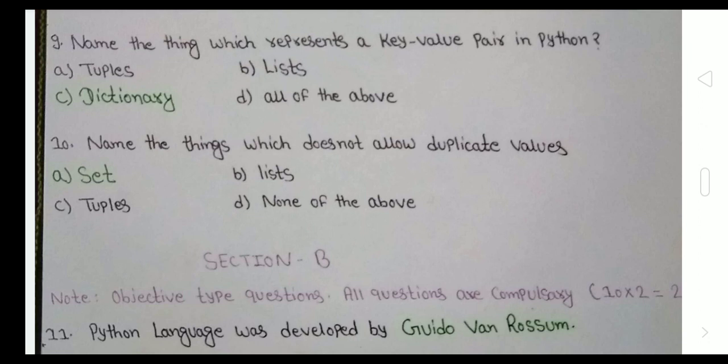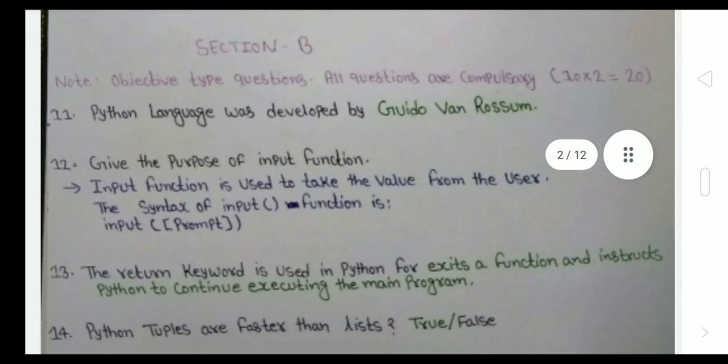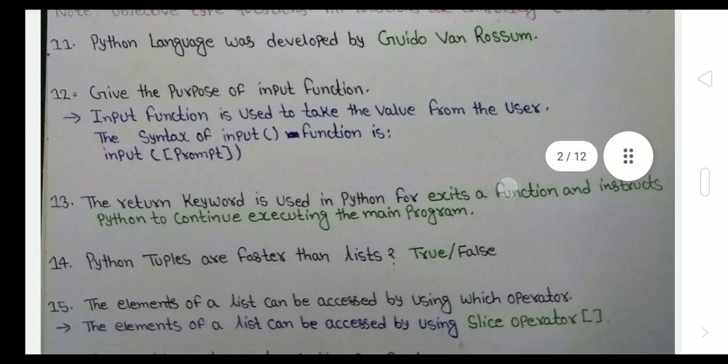Name the thing that does not allow duplicate values. The set does not allow duplicate values. If we write duplicate values, it will ignore and just print only one value. Here we come to the B section. The Python language was developed by Guido van Rossum. This is the objective type question where we have to write short answer or fill in the blanks or maybe true or false. The first one: the purpose of input function.